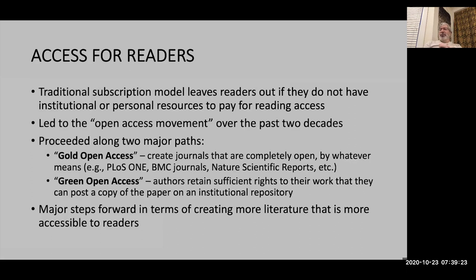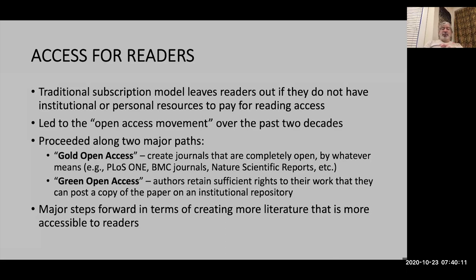The traditional model was one where a journal says our subscription price is X amount of money — it might be more for libraries than for individuals. That amount of money used to get you a hard copy of the journal, and now it gets you electronic access. All readers can only be readers if they have the resources to pay for that subscription. That led over the past couple of decades to the emergence of what we call the open access movement.